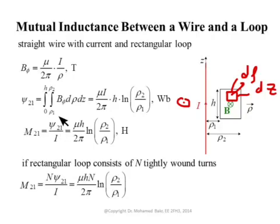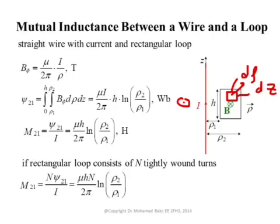This flux equals the flux linkage Lambda21 because we have only a single turn. Dividing by the current I, we get M21 = μh/(2π) × ln(ρ2/ρ1). This is the mutual inductance between the wire and the loop. If the rectangular loop had N tightly wound turns, the flux linkage would be N times the flux, so the mutual inductance would be scaled up by N. We can increase mutual inductance by increasing the number of turns.